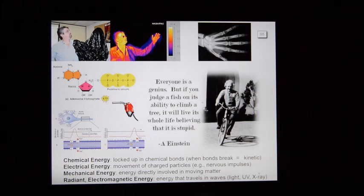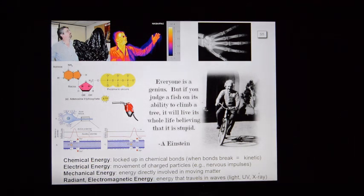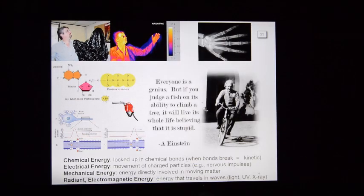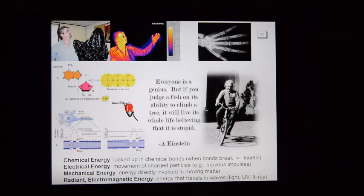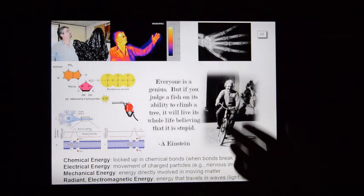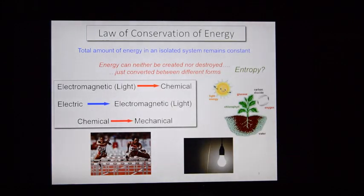Mechanical energy is directly involved in motion and doing work — it is kinetic. Like Einstein pedaling his bicycle, that is using mechanical energy, directly doing the job. Last but not least is radiant or electromagnetic energy, which travels in waves. This is light in all of its forms — not just visible light. For instance, an infrared image shows radiant energy being emitted by a person. Heat is essentially a form of radiant energy.